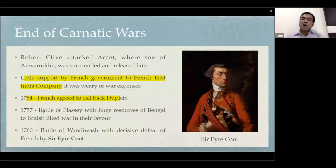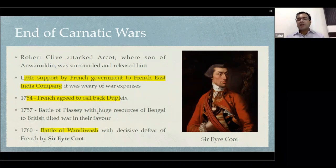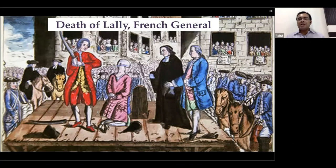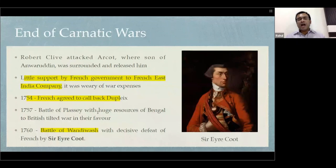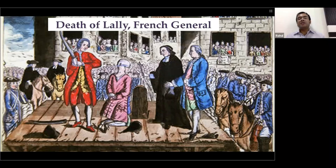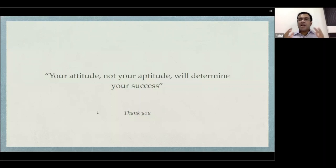The Battle of Plassey brought economic advantage into British favor. Finally, in the Battle of Wandiwash — very important to remember from a prelims point of view — Sir Eyre Coote defeated the French forces. This battle was so decisive that the general of the French army, General Lally, was brought to death in France. Sir Eyre Coote of the British army defeated General Lally of the French army, and General Lally was executed for this major defeat. This way, the British became the sole European contenders for power in the Indian subcontinent.